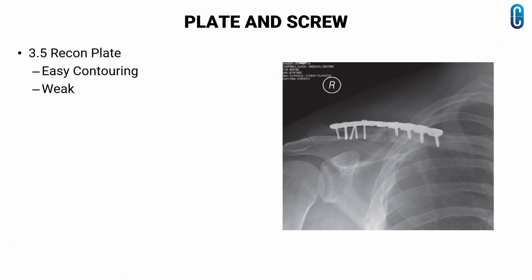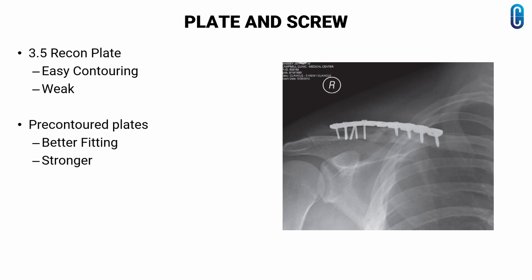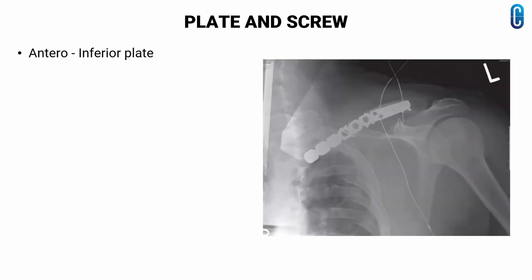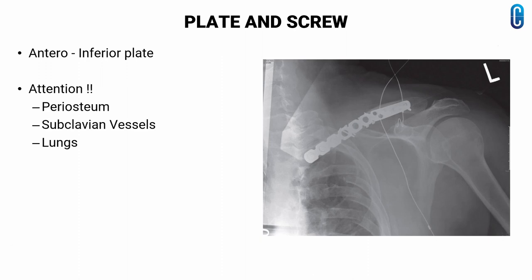Regarding plate and screw fixation, 3.5 reconstruction plates have been used for fixation of clavicle fractures. Even though they allow easy contouring, they may be too weak to maintain the reduction. Newer pre-contoured plates, which allow more accurate fitting while maintaining strength, have emerged in their place. Currently, the most common technique is superior placement of the plate. When the fracture configuration allows, antero-inferior plate placement is preferred because of safe screw trajectory and less hardware irritation. Meticulous attention is mandatory to preserve the periosteum and also avoid injury to the subclavian vessels and lungs.